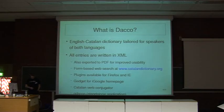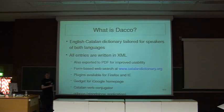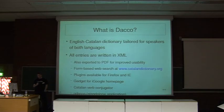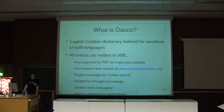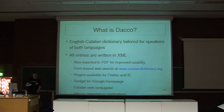DACO itself started with just some XML files, with entries in Spanish, Catalan, or English, explaining what a word is or providing a translation. DACO is a bilingual dictionary — mainly we say, for example, 'apple' in English is 'poma' in Catalan, similar to French 'pom'.